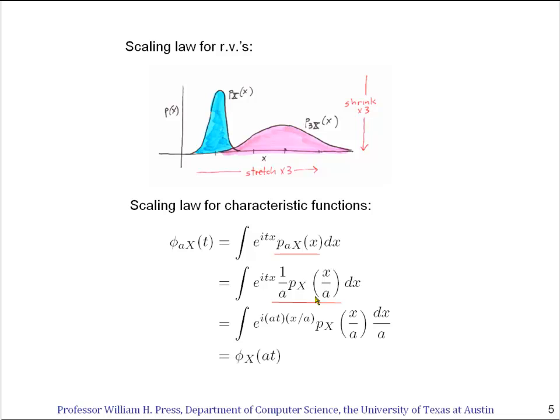Suppose a is 3. It says that we have to change the argument by a factor of 3 to scale back down to the blue curve. So we would divide whatever variable we have, whatever value of x we have, by 3. And then we have to fix the normalization by also dividing by 3 here.